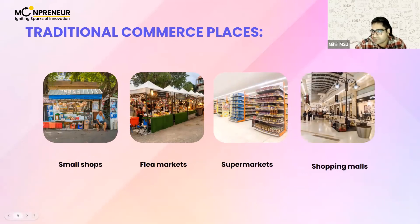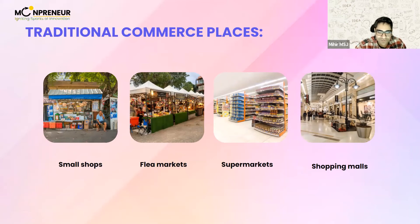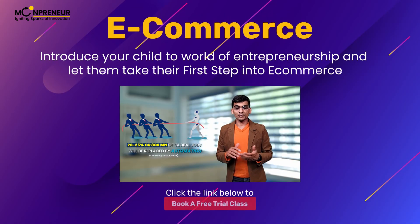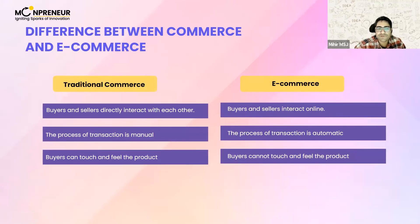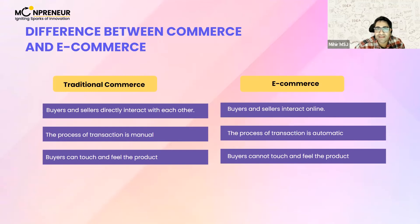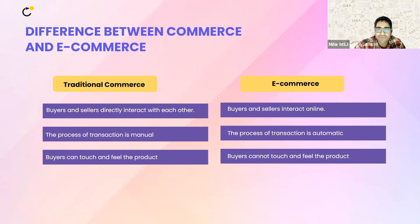Traditional commerce includes small shops, flea markets, supermarkets, and shopping malls — places where you actually go and buy something in person. When you go to the mall to buy something, that activity is commerce. When you're buying something online, it's e-commerce. In traditional commerce, buyers and sellers interact directly — you go to a clothes or shoe shop, try things on, pay, and get your item. With e-commerce, buyers and sellers interact indirectly. Placing an order for shoes on Amazon, you don't see or talk to the seller.